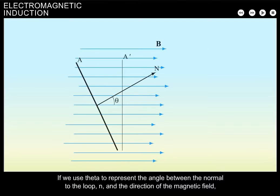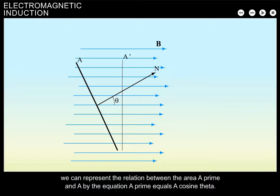If we use theta to represent the angle between the normal to the loop N and the direction of the magnetic field, we can represent the relation between the area A prime and A by the equation A prime equals A cosine theta.